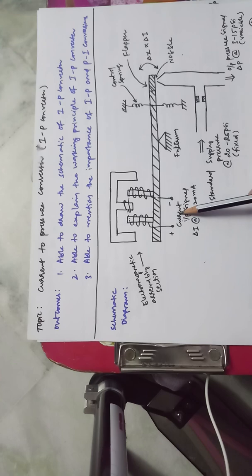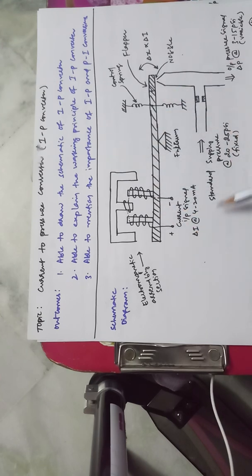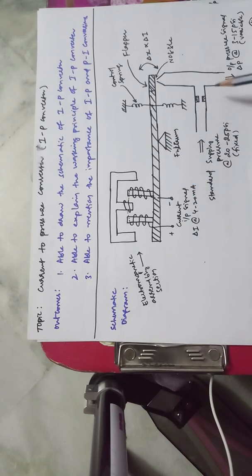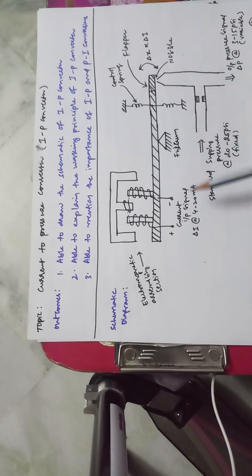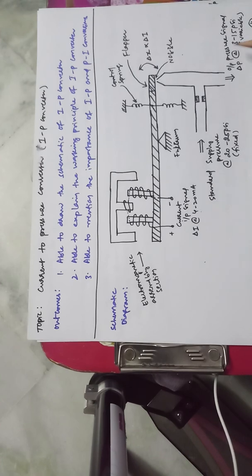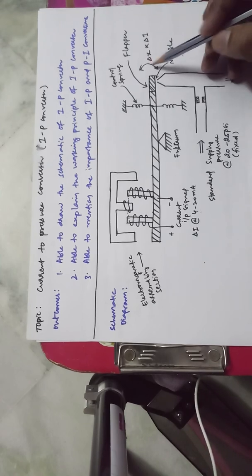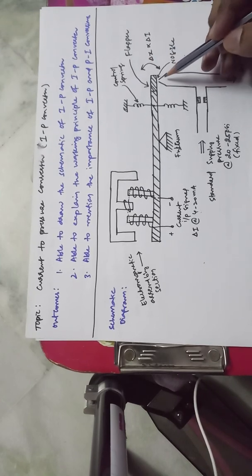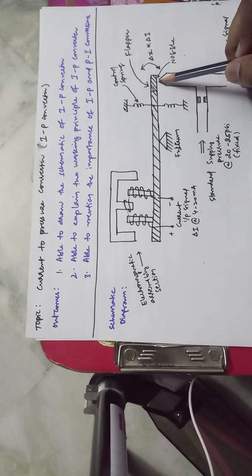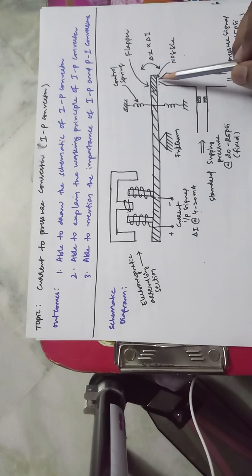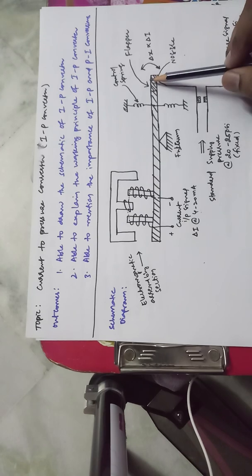When the input is 4 milliamps, the output should be 3 PSI. When the input is 20 milliamps, the output should be 15 PSI. Prior to operation of the I2P converter, two calibrations must be ensured: minimum calibration (4 milliamps input → 3 PSI output) and maximum calibration (20 milliamps input → 15 PSI output). Based on the flapper movement, the nozzle takes its position, and the gap between the flapper and nozzle changes accordingly.